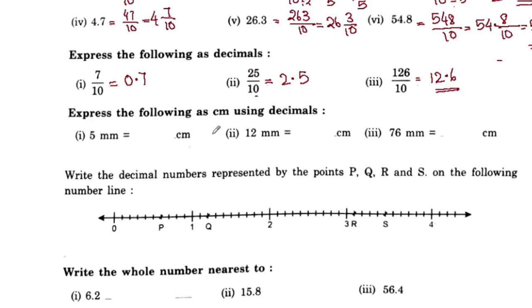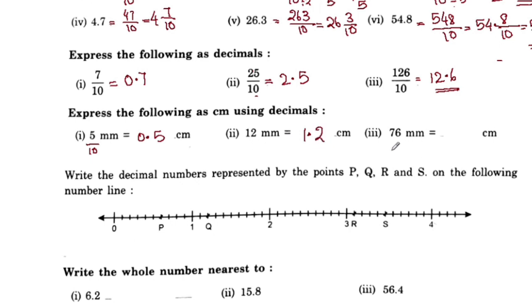Express the following in centimeters using decimals. 5 millimeters to centimeters: 5 by 10 is 0.5 centimeters. 12 by 10 is 1.2. 76 by 10 is 7.6.